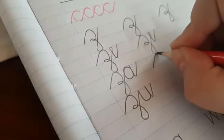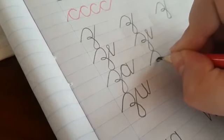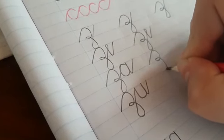Then we're going to join it to the a. Up round little loop and then bigger loop and then into the a.